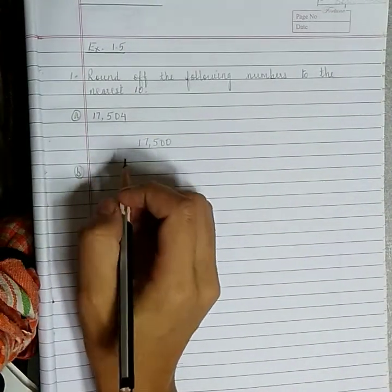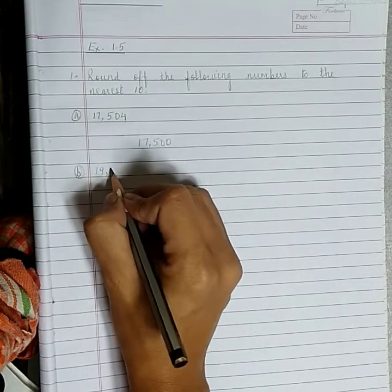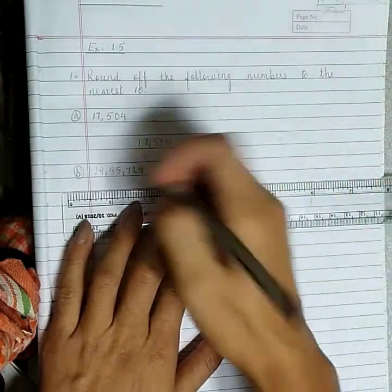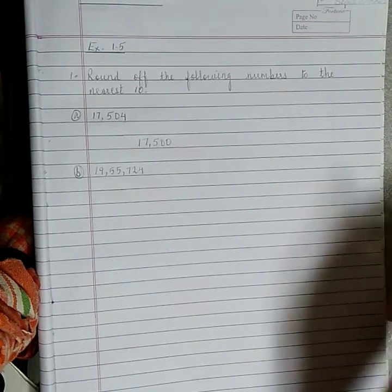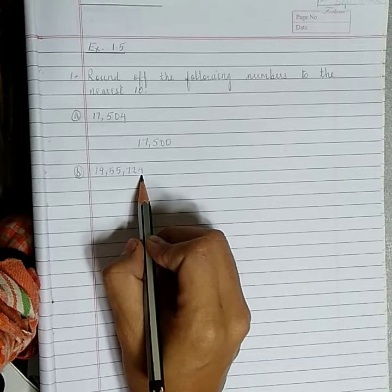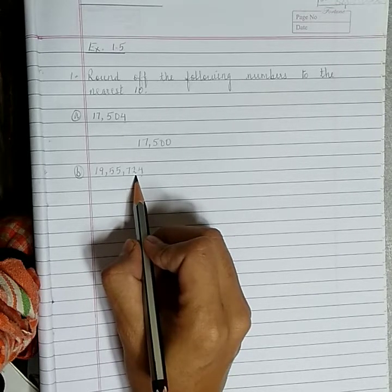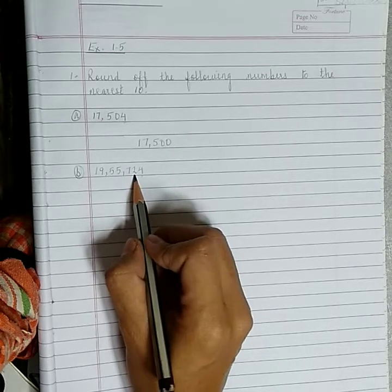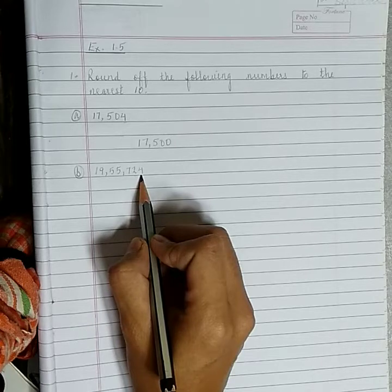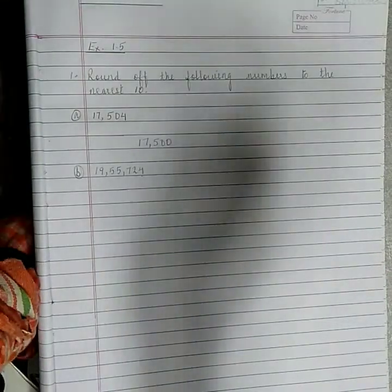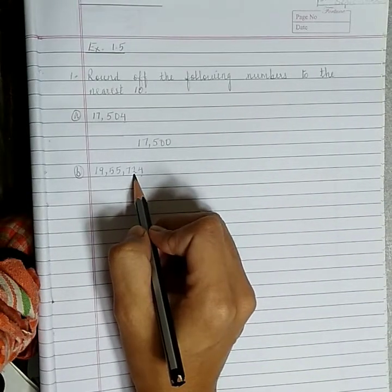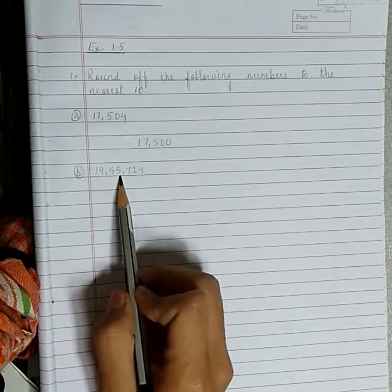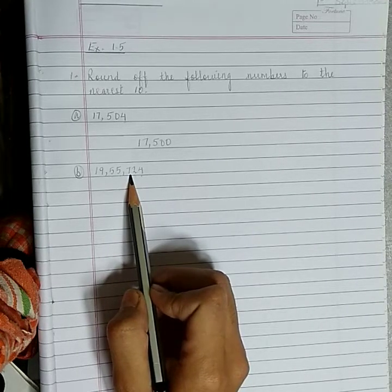Question number B: nineteen lakh fifty five thousand seven hundred twenty four. Looking at the ones place, we see four. Two is at the tens place, so the answer will be 19,55,720.